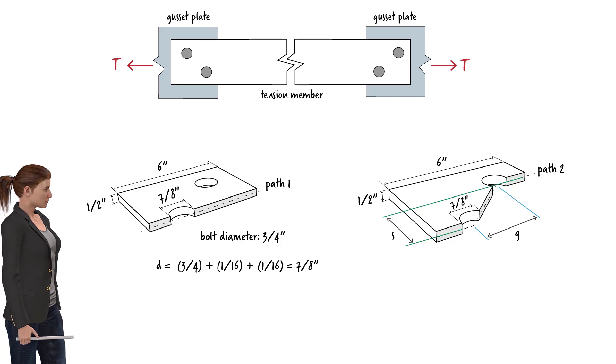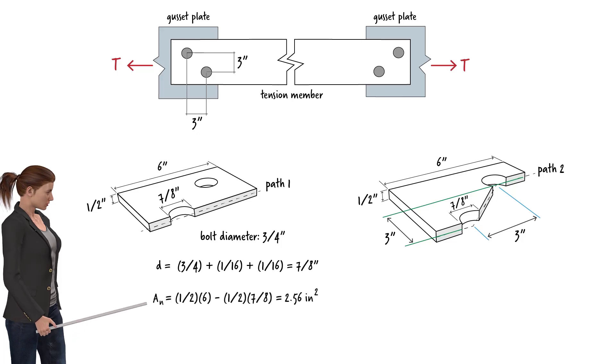For this tension member, the horizontal spacing between the two bolts is 3 inches. Given these dimensions, the net area for path 1 becomes 2.56 square inches, and the net area for path 2 is 2.5 inches.